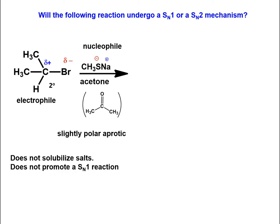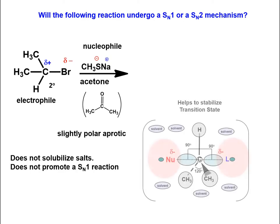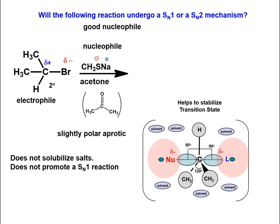It will not promote an SN1 reaction. The solvent will help stabilize a dispersed transition state of an SN2 reaction, which was discussed in the SN2 module. The sulfide is a very good nucleophile. We have a good nucleophile and an aprotic solvent — this will undergo an SN2 reaction.